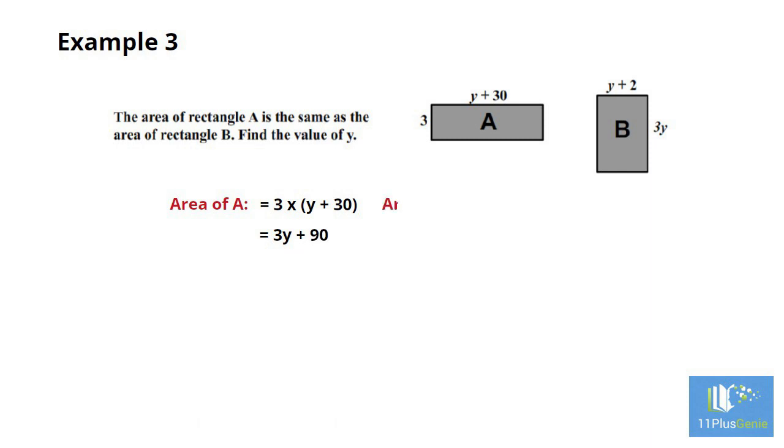For rectangle B we have 3y times y plus 2. This equals to 3y squared plus 6y.